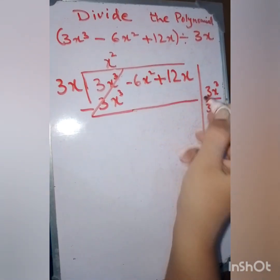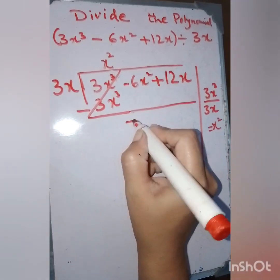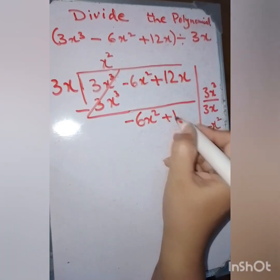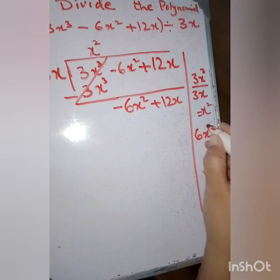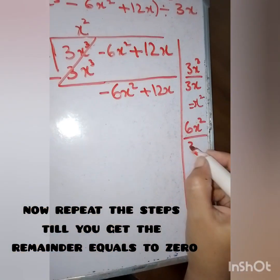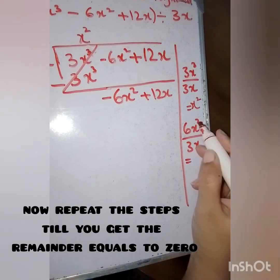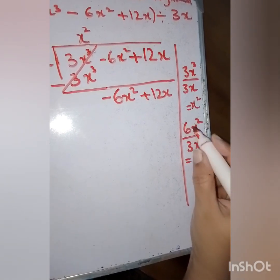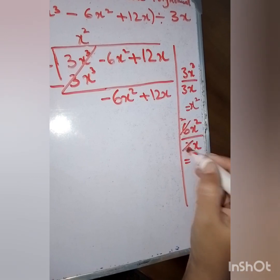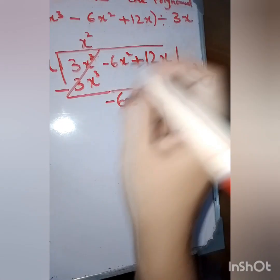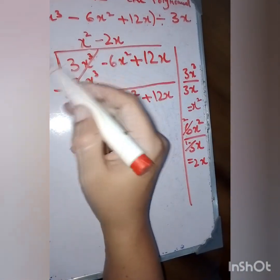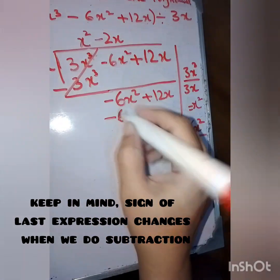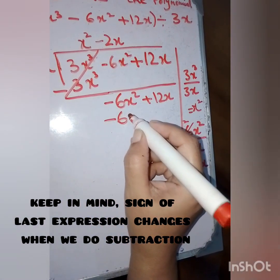Now drag the remaining terms: -6x² + 12x. The first term of the dividend is -6x², and the first term of the divisor is 3x. So the answer will be -2x. Multiplying -2x by 3x gives -6x². When we add powers of x, 1 plus 1 equals 2, so we get x².